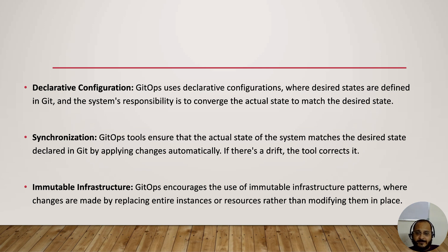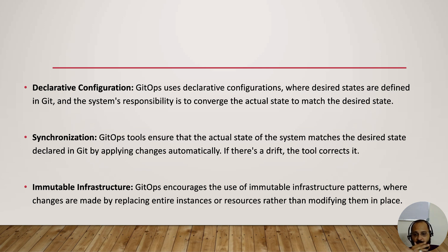If you want to modify some resource in your infrastructure — for example, opening a port — you have to run the entire configuration again to reflect the changes. It will replace the entire system instead of just modifying it in place. This is how GitOps follows the immutable infrastructure approach.